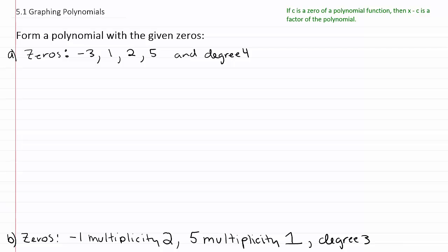Form a polynomial with the given zeros. To do this problem, let's pay attention to what we have written here in green. It says if c is a zero of a polynomial function, then x minus c is a factor of that polynomial.